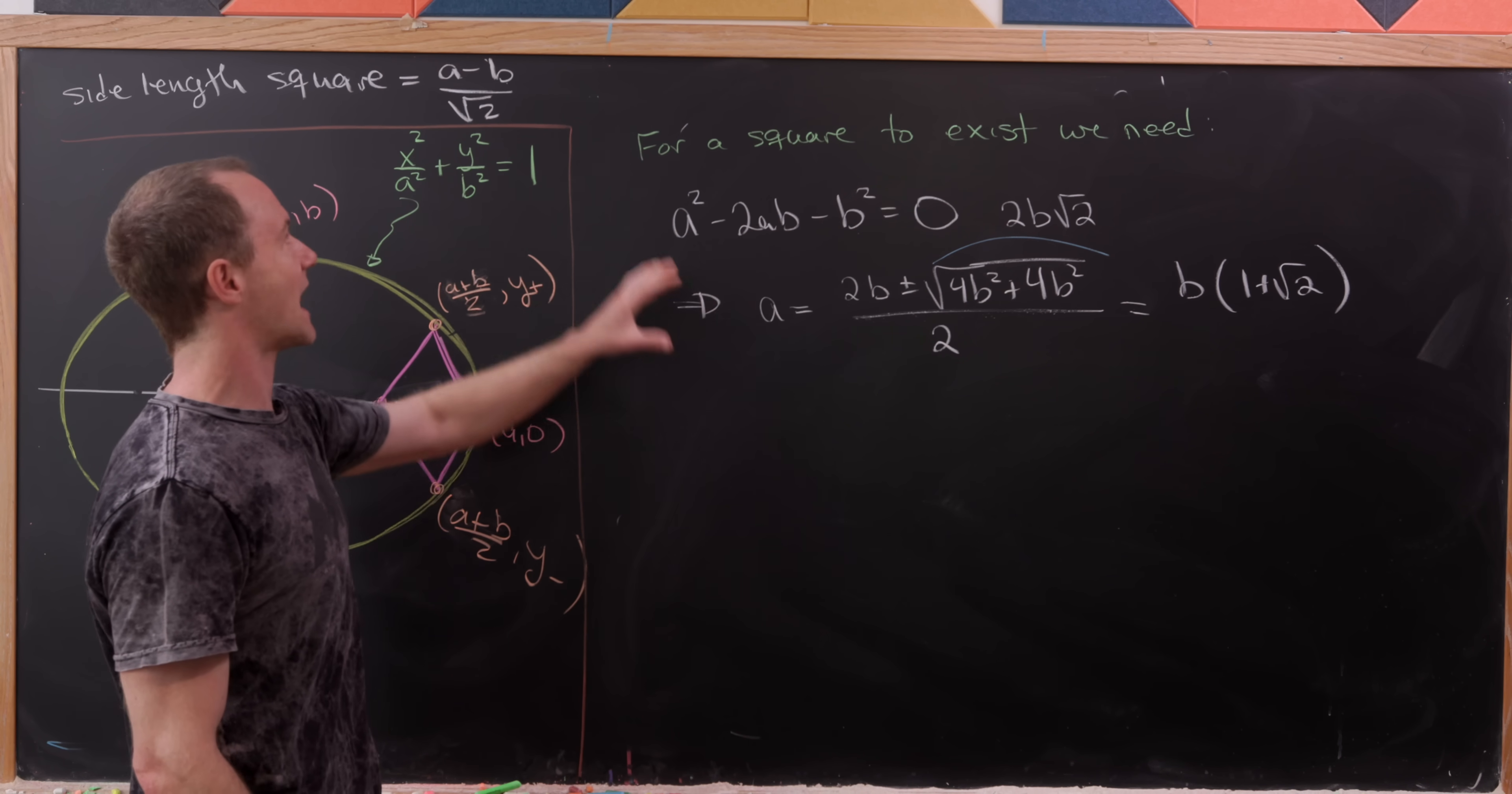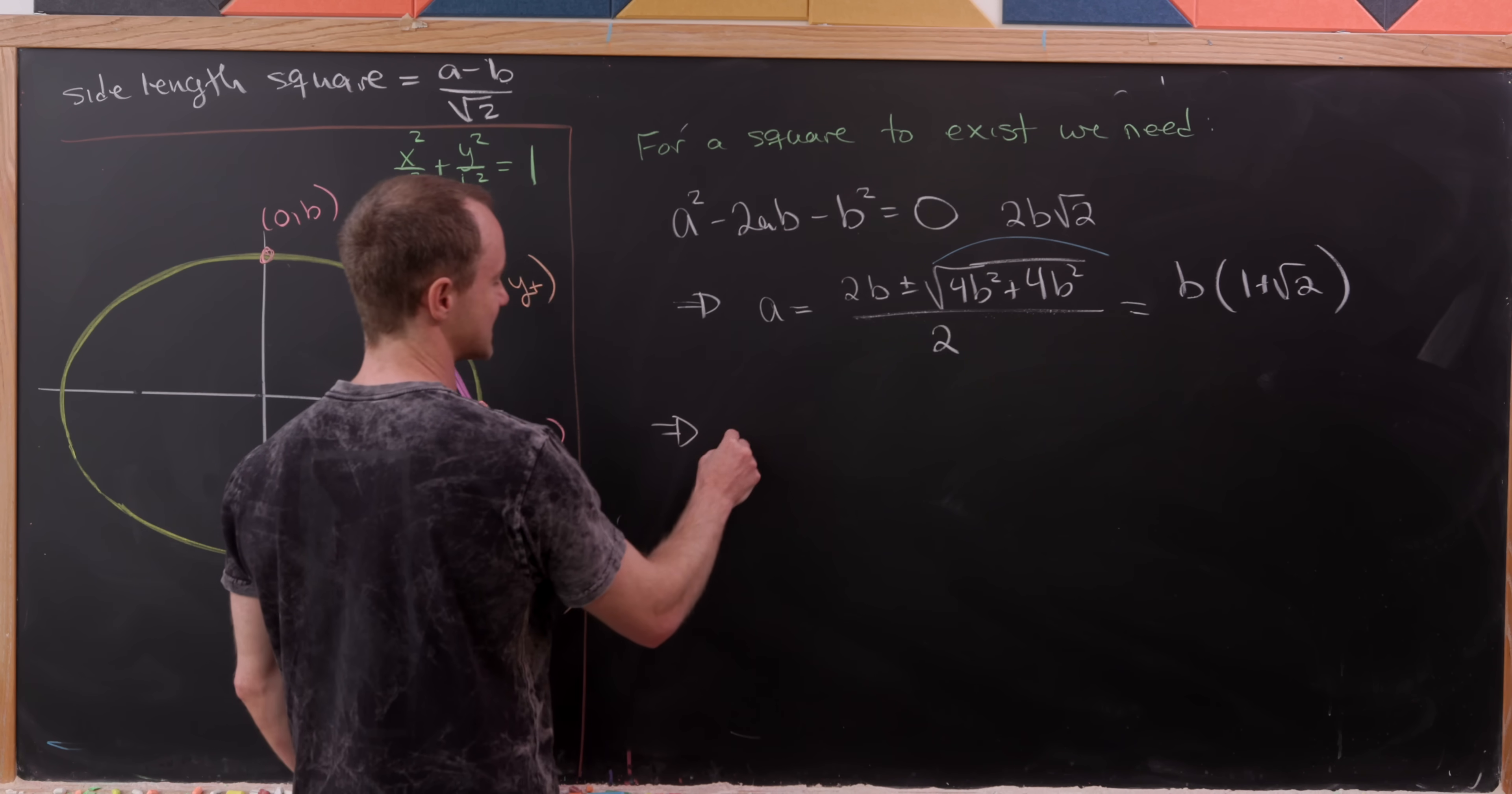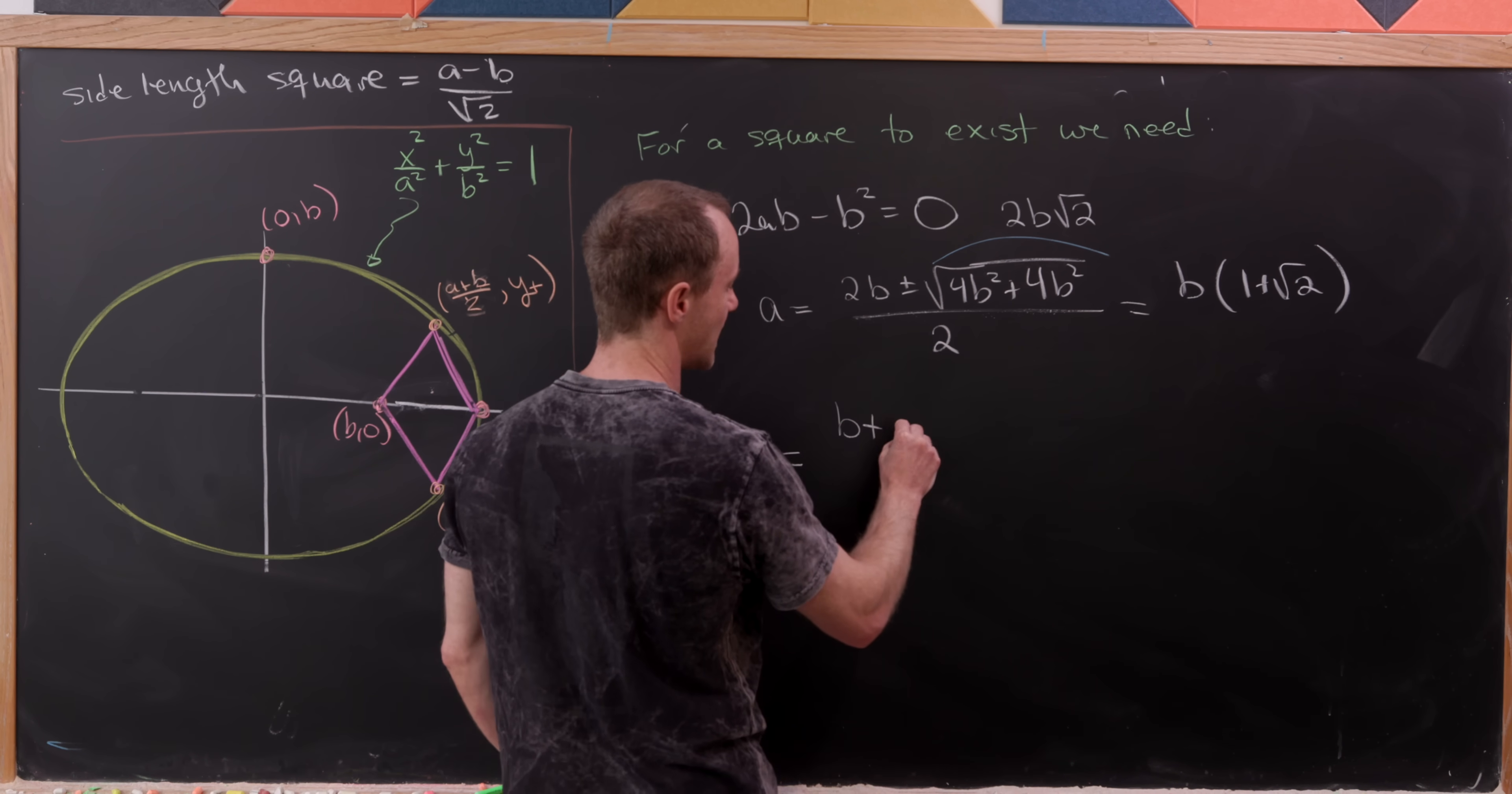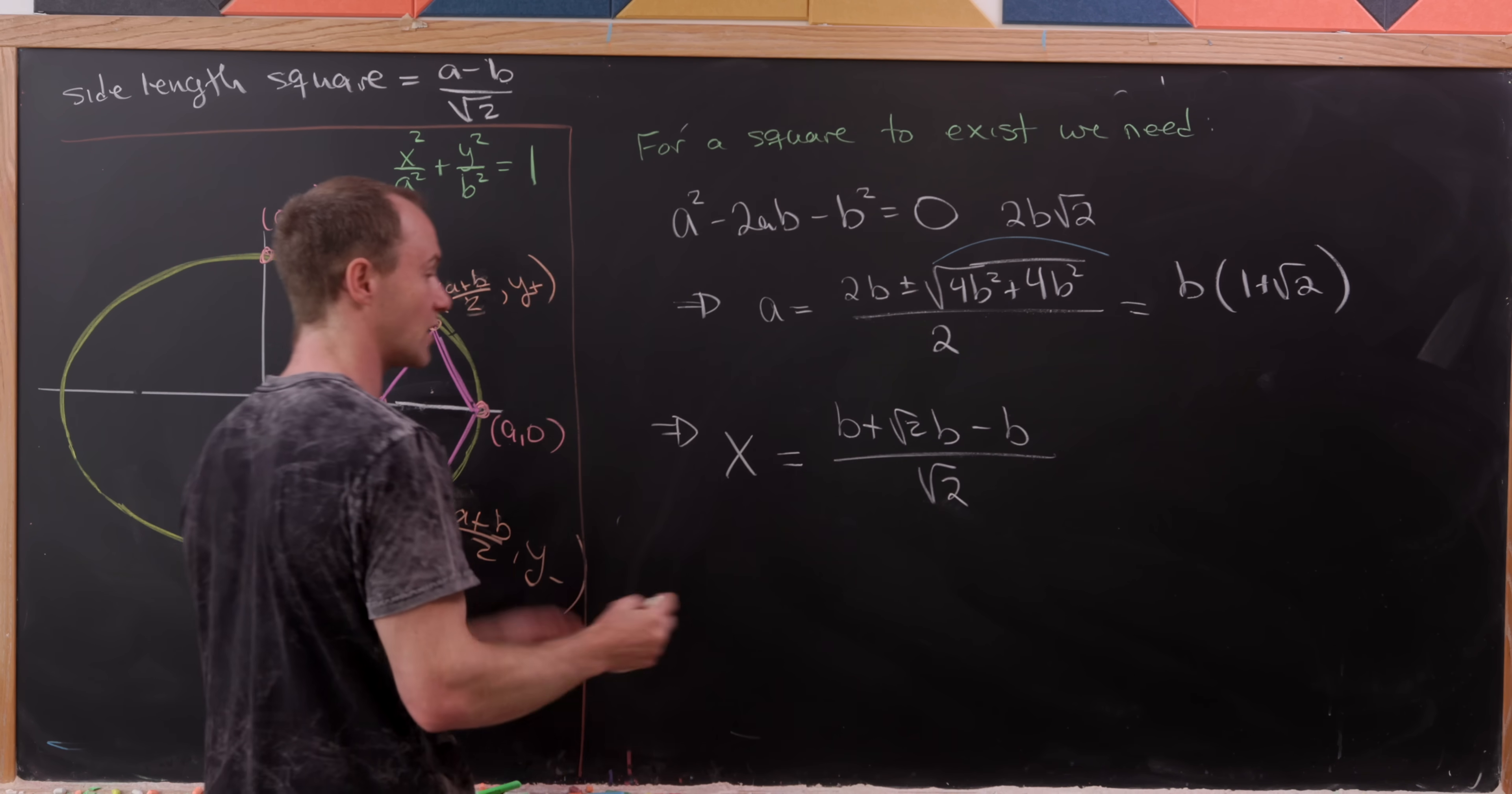But now let's plug that into what we have up here and see what happens. We're going to have the side length of the square, which I'll go back to calling x again. So that's going to be (b + √2·b - b)/√2 when all is said and done.